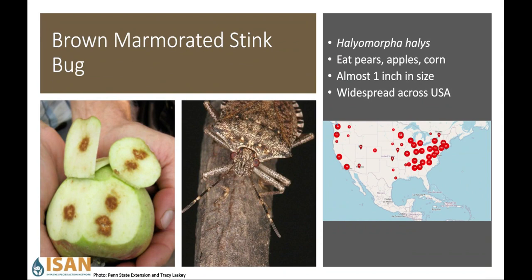Next is the brown marmorated stink bug. As its name suggests, it is brown, 'marmorated' means it has a marbled pattern on its back, and 'stink' — if you crush it, it lets off a stinky odor. This bug likes to eat a lot of the different kinds of foods that we eat, damaging produce like apples. There's not too many fruits or veggies it doesn't like. It's been found in many different states in the U.S. It's worth noting that it can look like some beneficial native insects, so looking at key features like antennae or striping on its abdomen can help tell the difference.